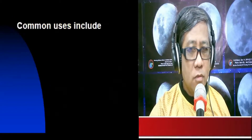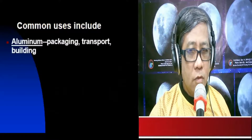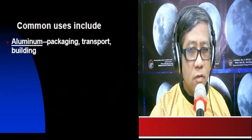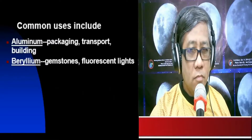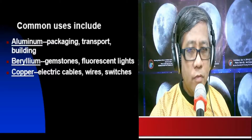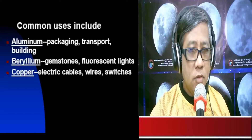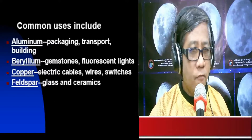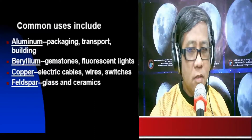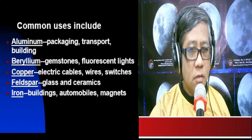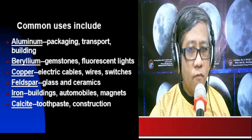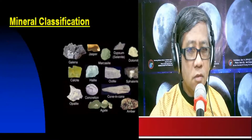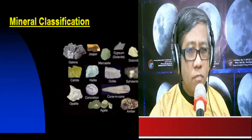What are the common uses of minerals? Aluminum is used as packaging materials, in the transport industry, in building automobiles, and as building materials. Beryllium is used in making gemstones and in fluorescent lighting. Copper is used in electrical wires, cables, and switches. Feldspar is used in glass making and ceramics. Iron is used as a building material, in the manufacture of automobiles, and in magnets. Calcite is used in the manufacture of toothpaste and as a construction material.